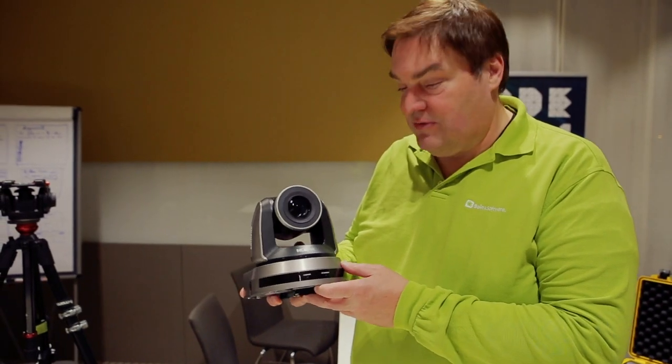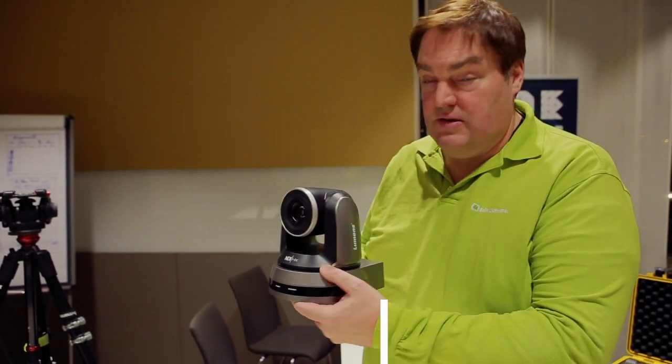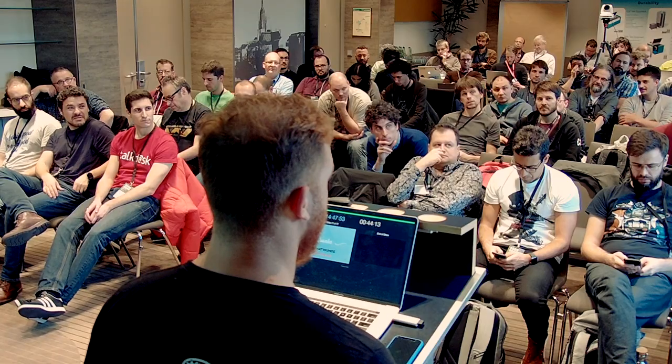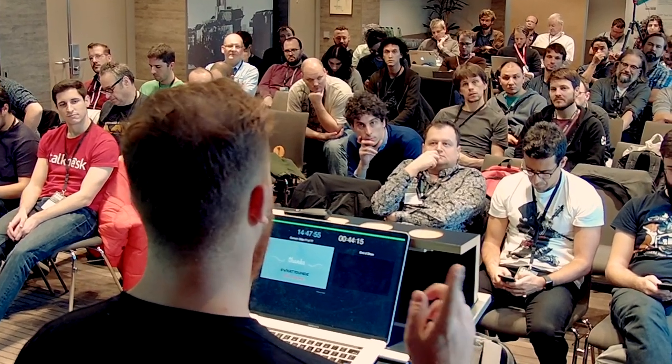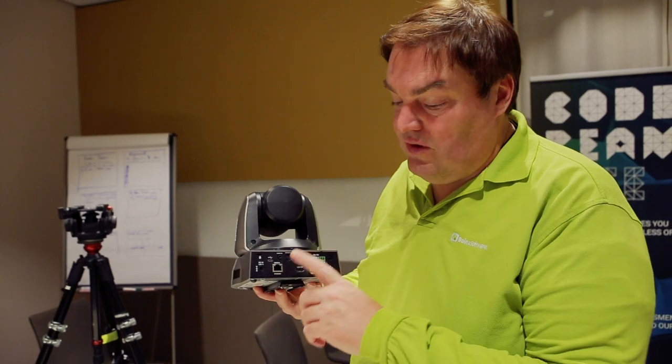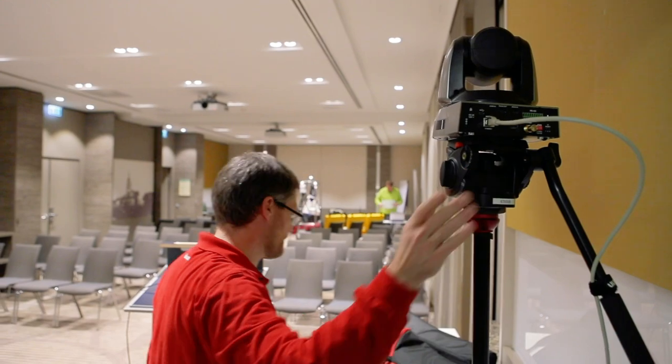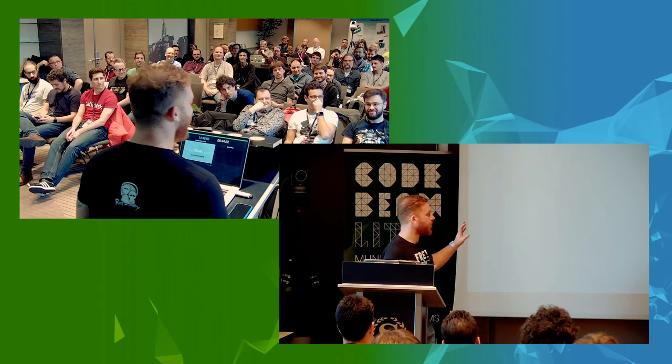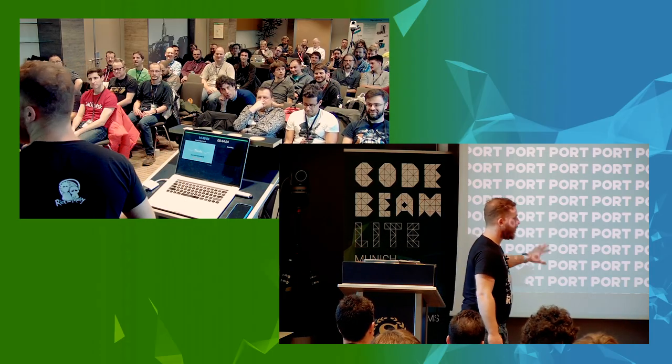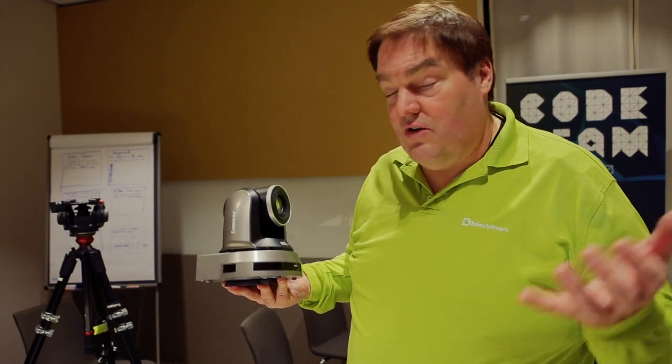These are going to be the cameras we are going to be using — nice cameras by Lumens, NDI-HX cameras. The advantage of those is pan-tilt-zoom, so we can remote control them from the recording booth. We only have one cable, and that cable carries both power and video signal over Ethernet. We are going to have two of those: one looks at the speaker, and the other shows a little bit of the audience or the room atmosphere in general.